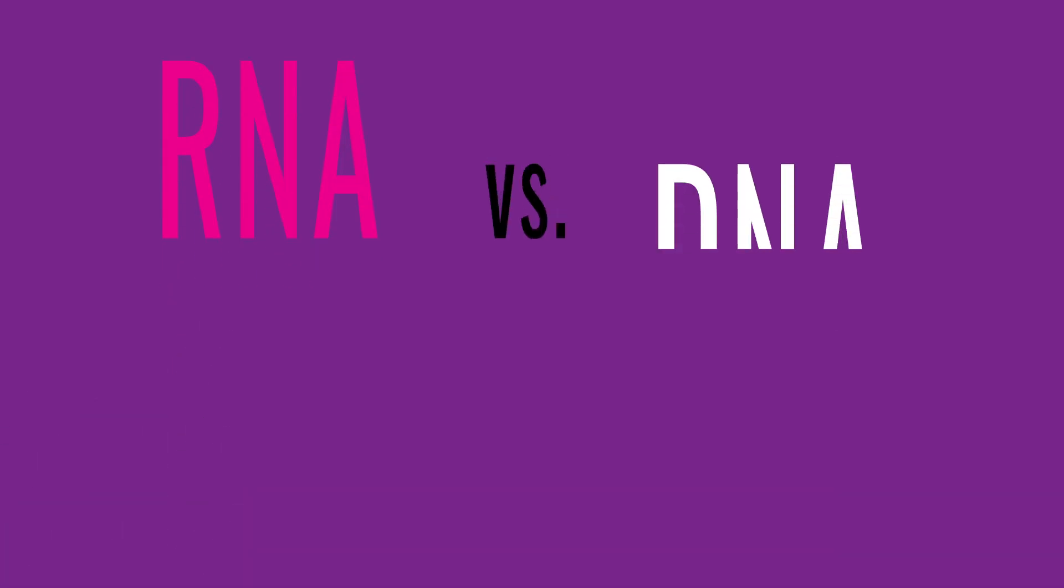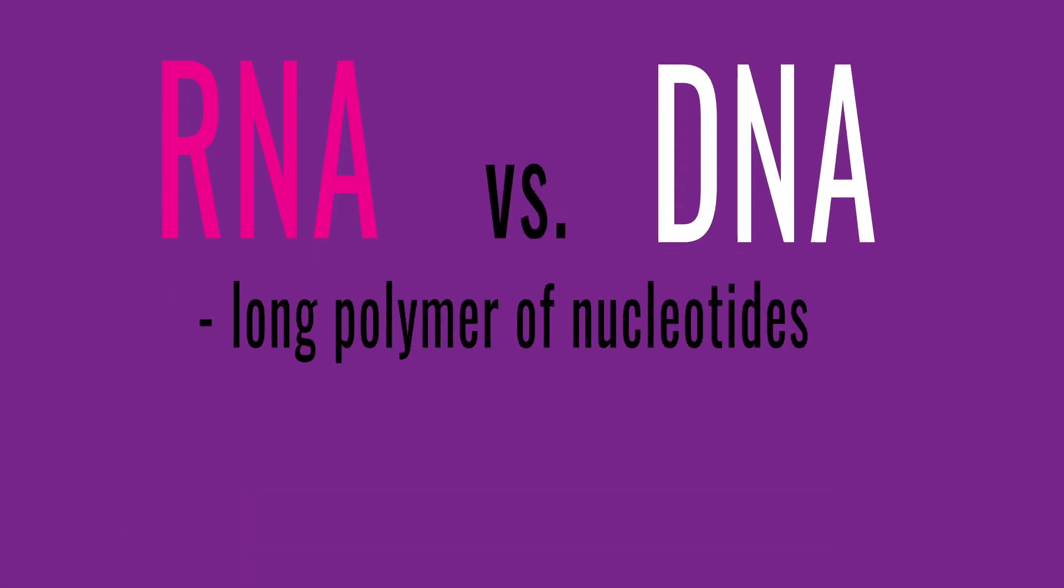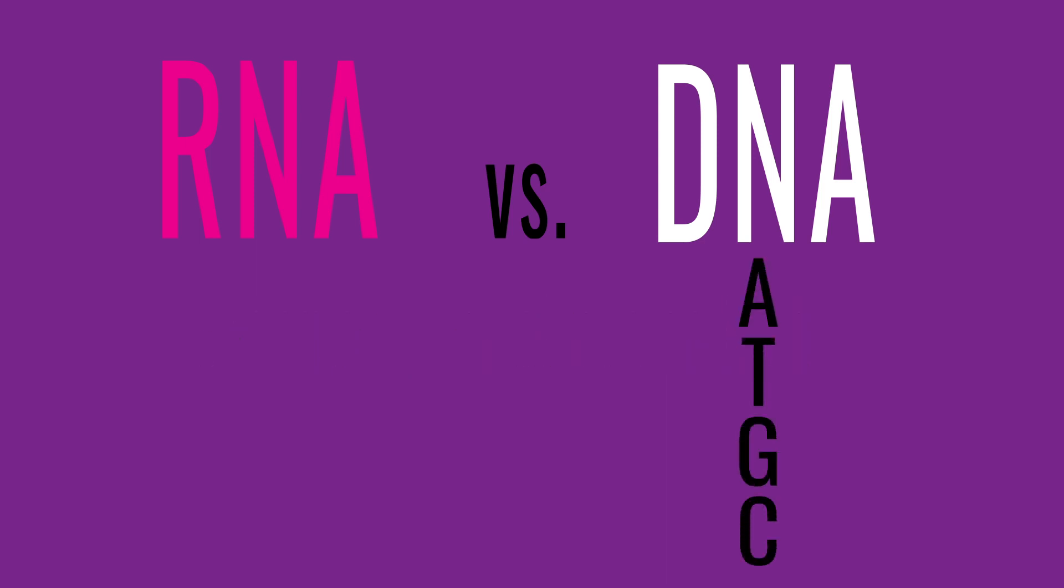RNA is very similar to DNA, which is a long polymer of chemicals called nucleotides. While DNA consists of A's, T's, G's, and C's, RNA has U's in place of T's. Otherwise, it's pretty much the same stuff.